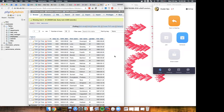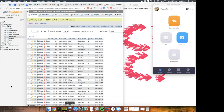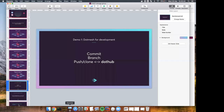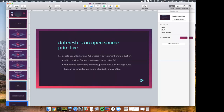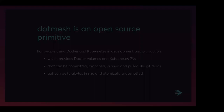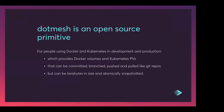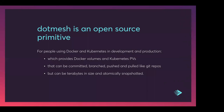So that's another use case for .mesh — it can be used for moving data around between production systems as well as development. .mesh is an open source primitive for people using Docker and Kubernetes in development and production. It provides Docker volumes and Kubernetes PVs that can be committed, branched, pushed and pulled like Git repos, but they can be terabytes in size and can be automatically snapshotted. That's the end of my presentation. Thank you very much.